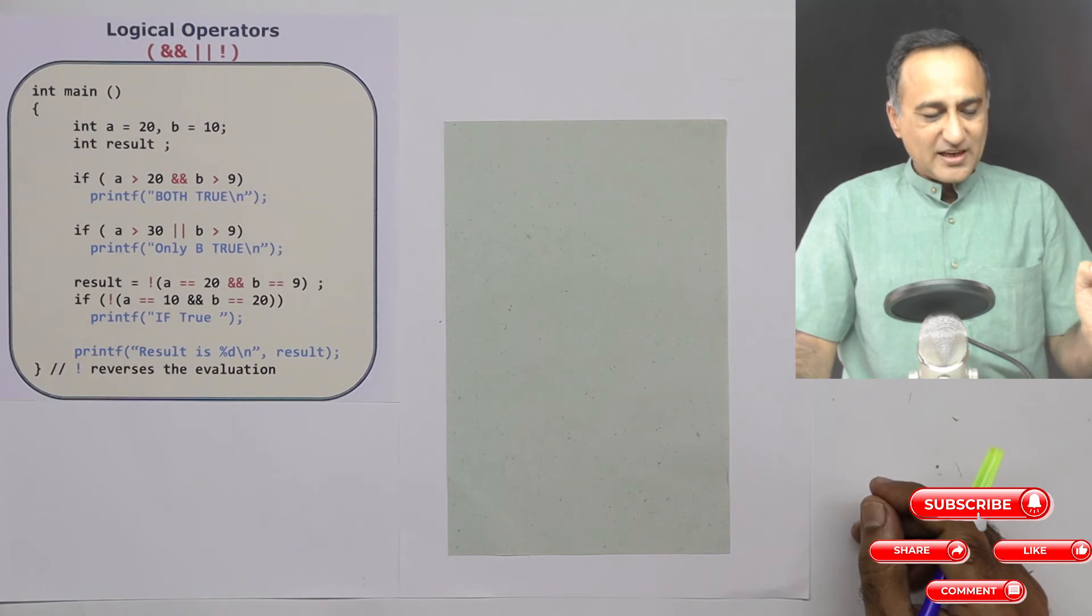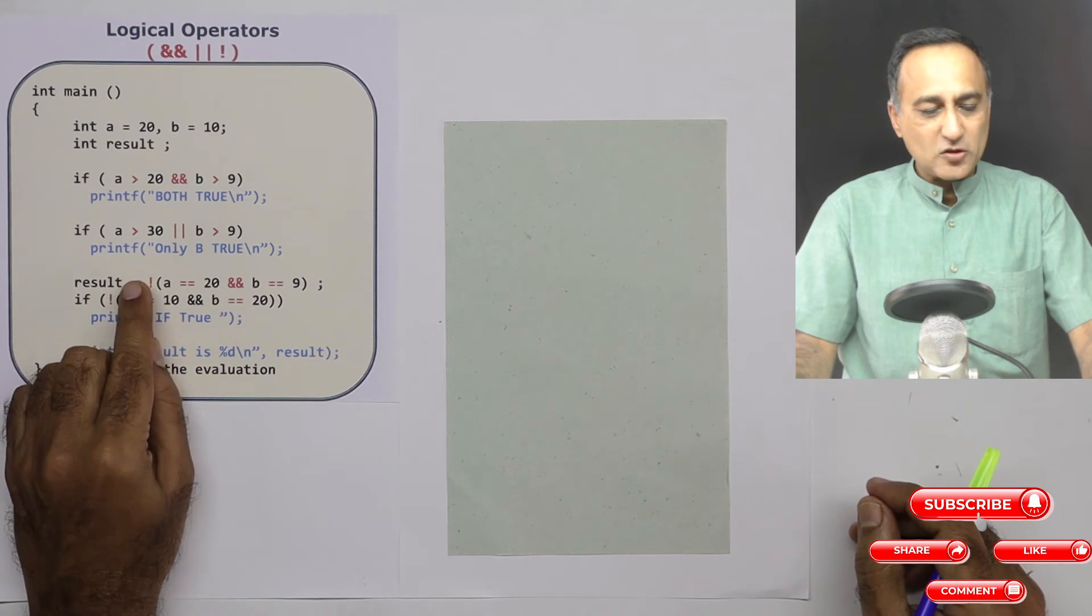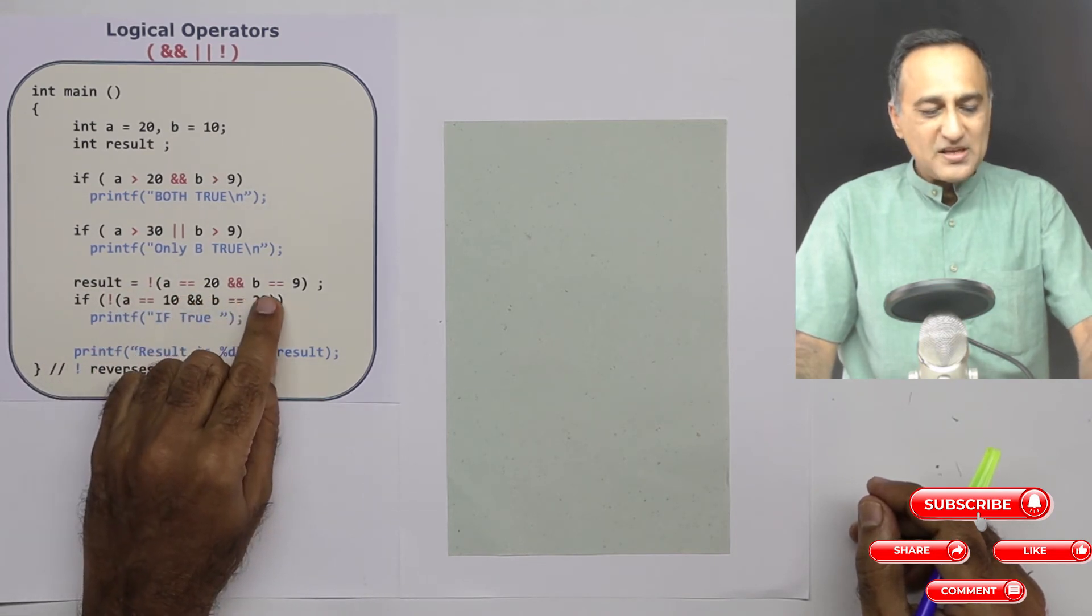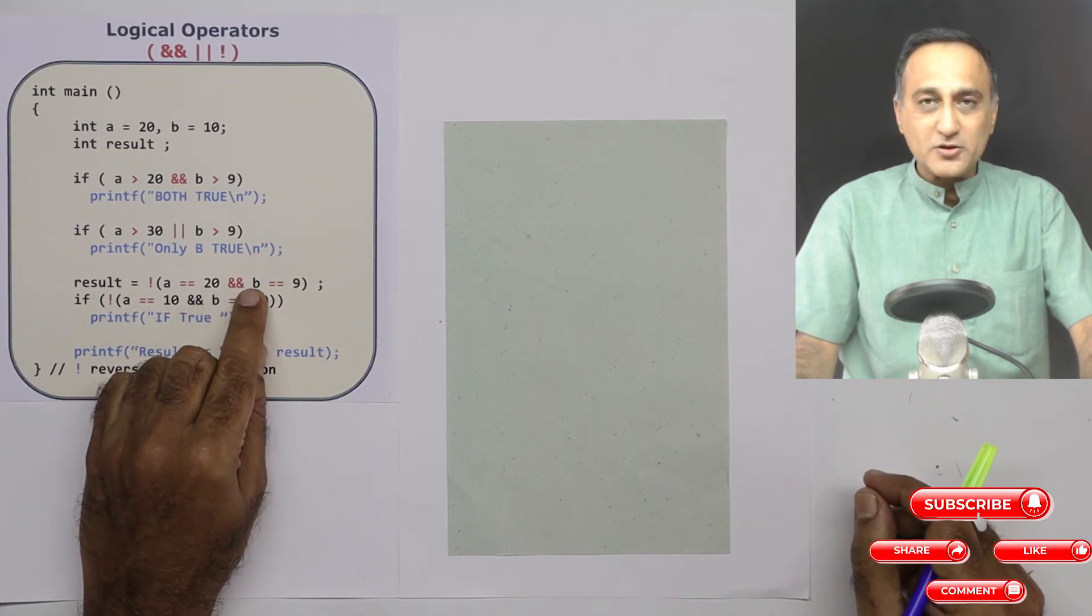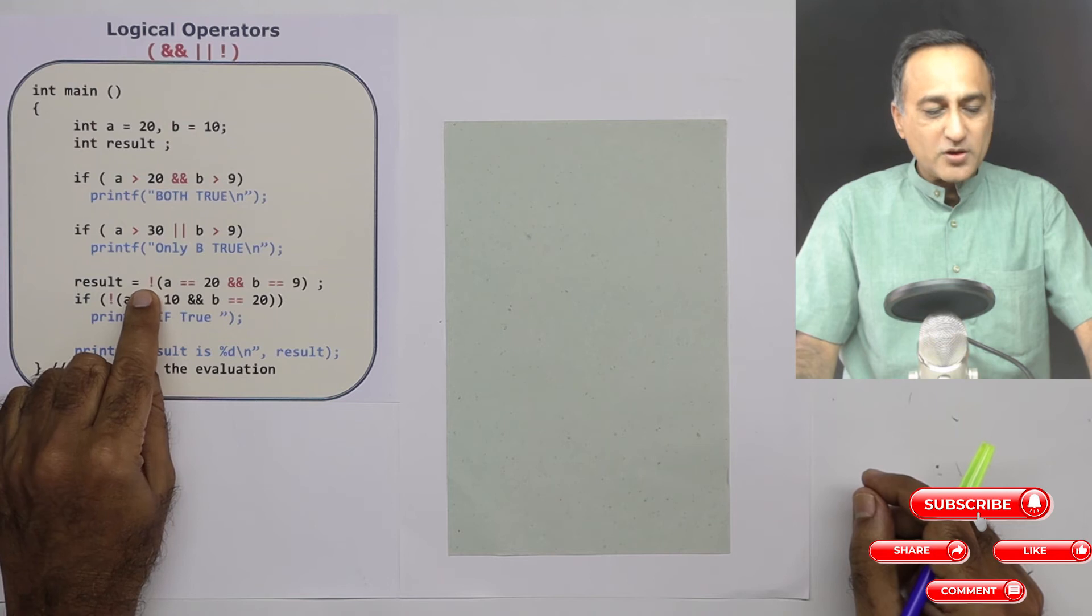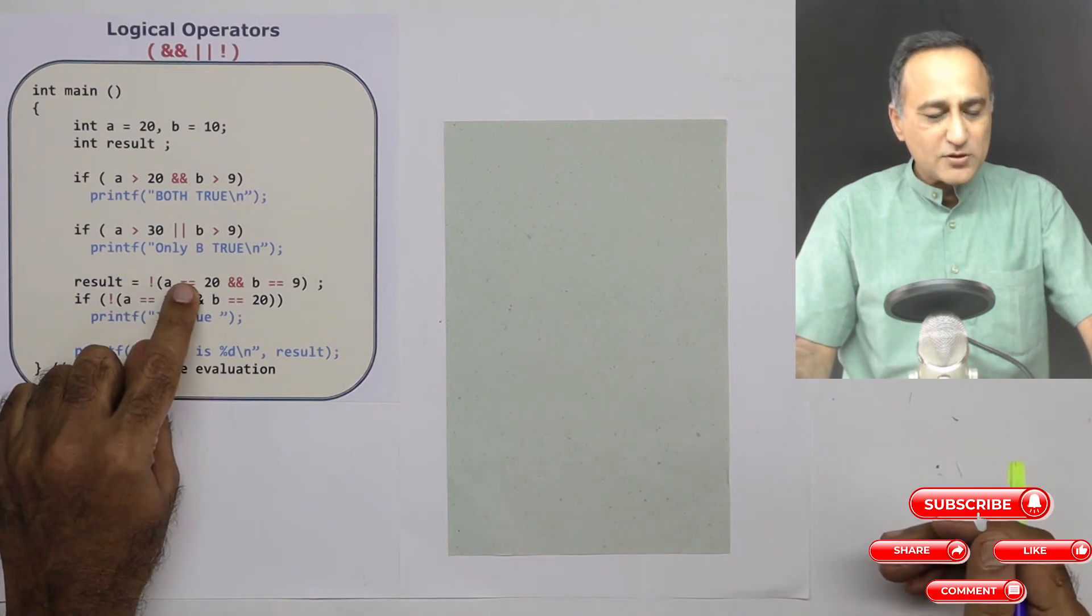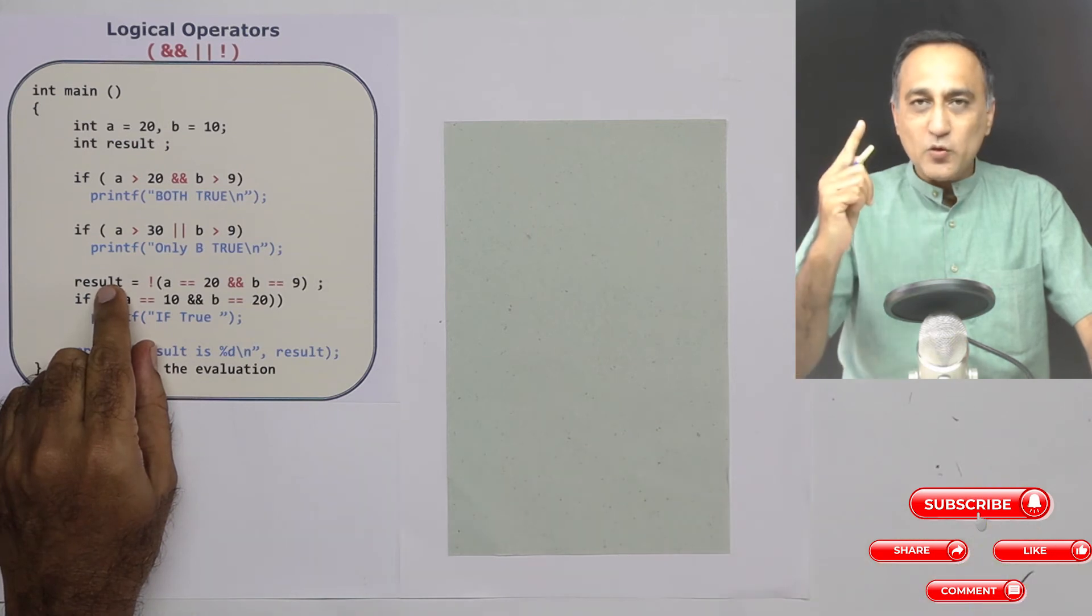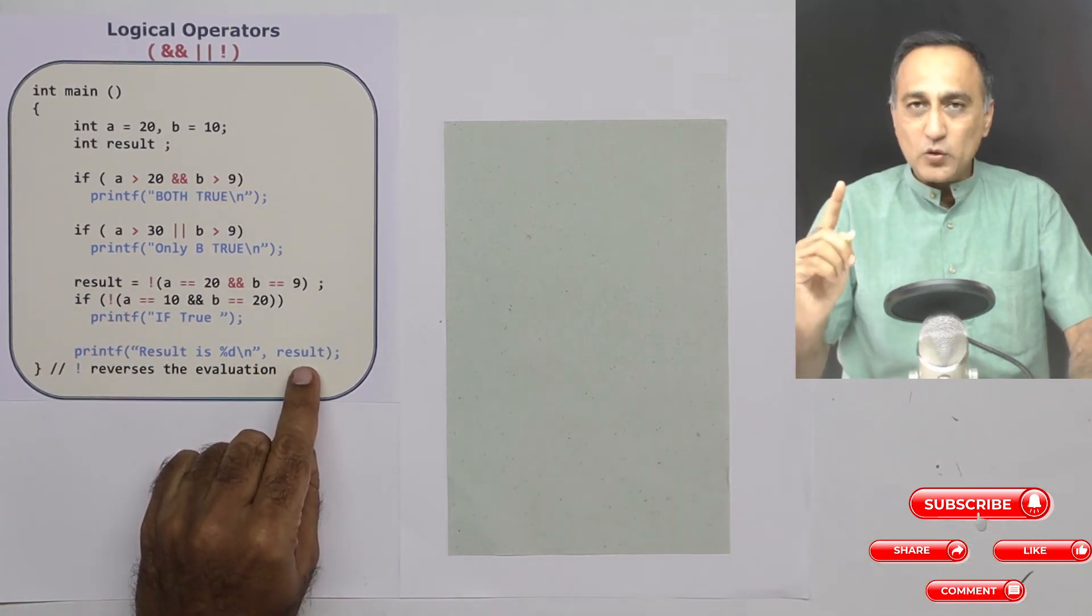Now let's take a look at the not logical operator. Here what I am doing is, forget this not, I am saying A is equal to 20. It is true. And B is equal to 9. This is false. So this entire thing is false. But this logical not, what it does is if it is true, it reverses it to false. If it is false, it reverses it to true. So since this entire thing was false, opposite of false is true. So result will have the value 1 in it now. So if I print result here, it is going to print the value 1.